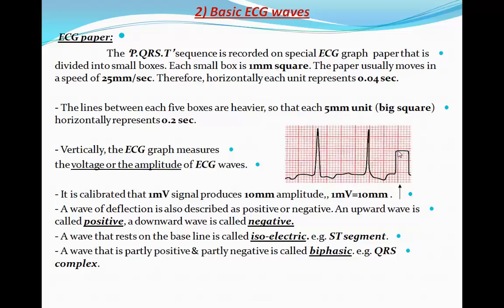A wave of deflection is also described as positive or negative. An upward wave, like the R wave, is called positive. A downward wave is called negative. A wave that rests on the baseline is called isoelectric, like the ST segment or the PR segment. A wave that is partly positive and partly negative is called biphasic, like the QRS complex and some P waves.